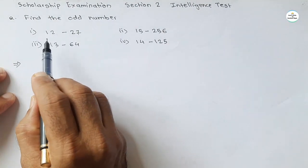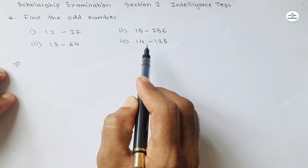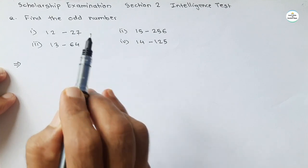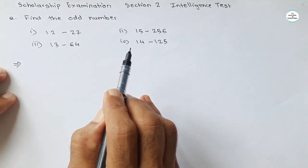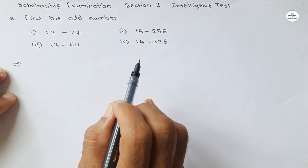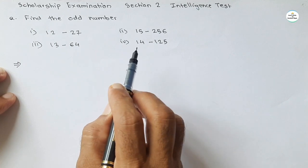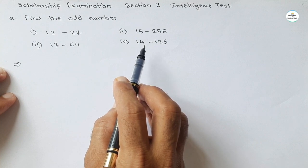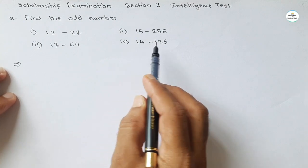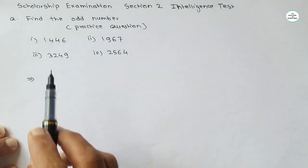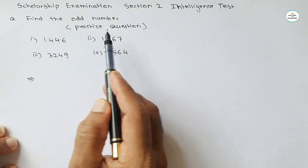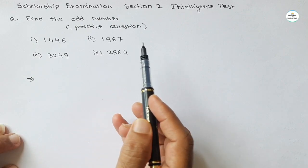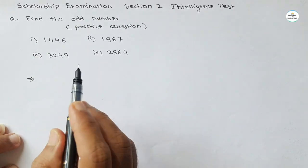Four groups of numbers are given and one group is the odd one out — we have to find that odd number. But before seeing the solution of the current question, let's first see the practice question given in the last video and its solution. In that practice question, four numbers were given and one number is odd — out of the four numbers we have to find the odd number.